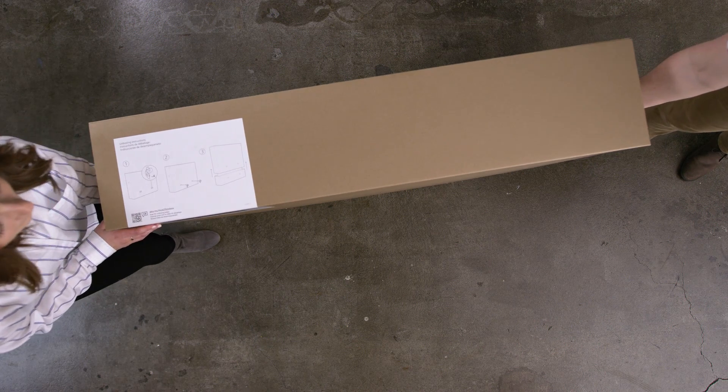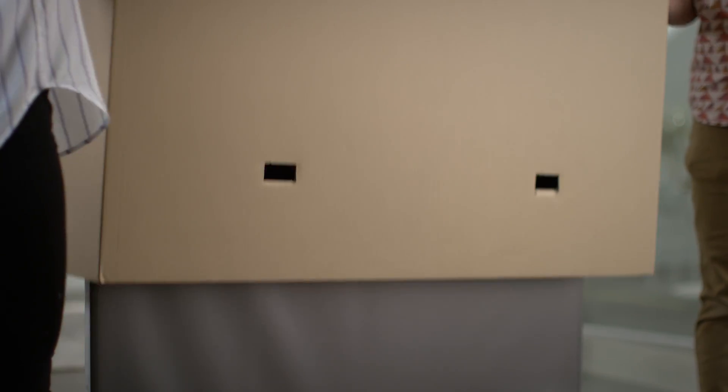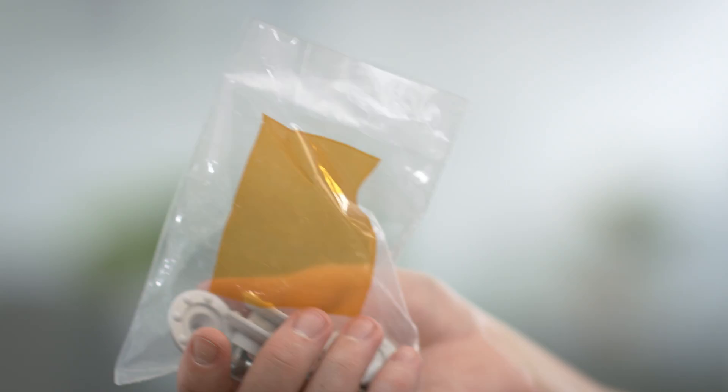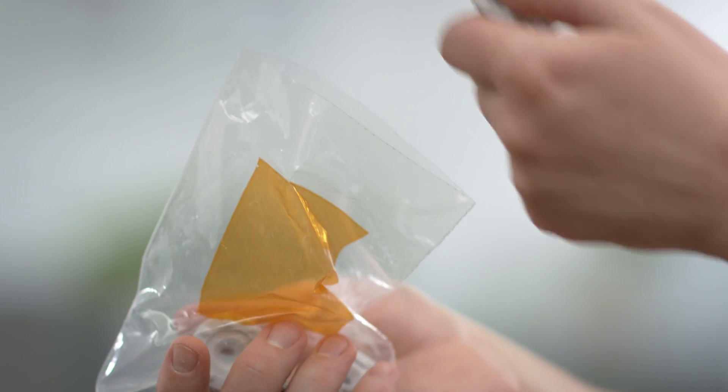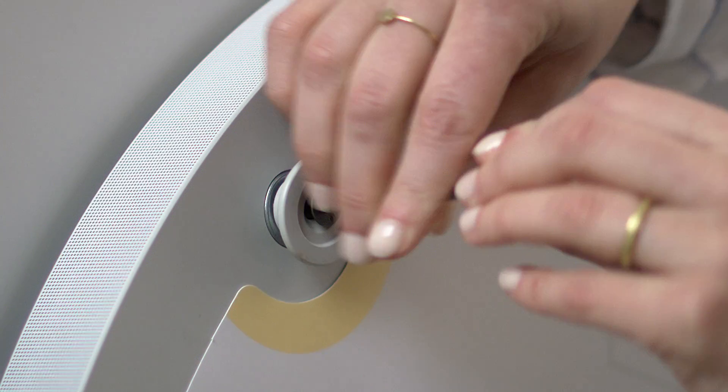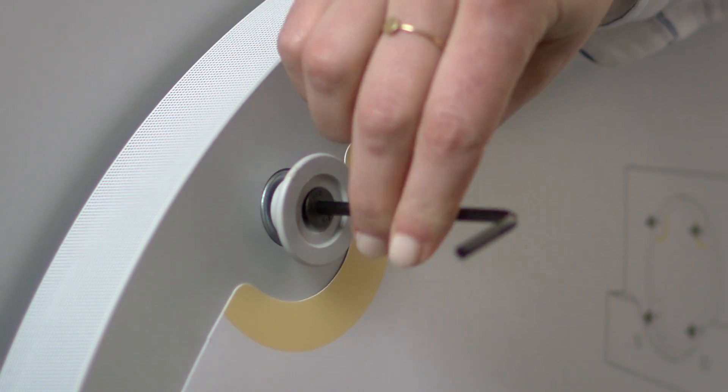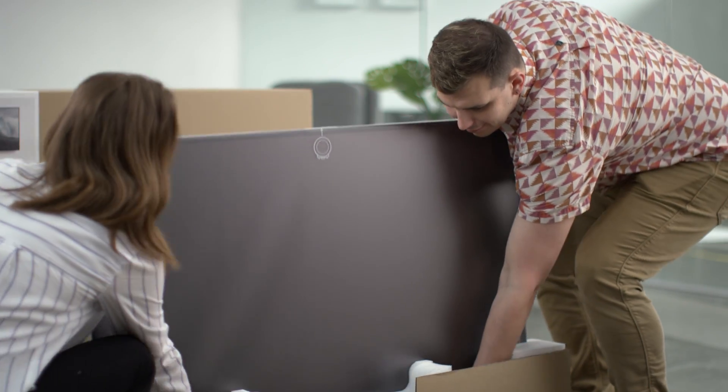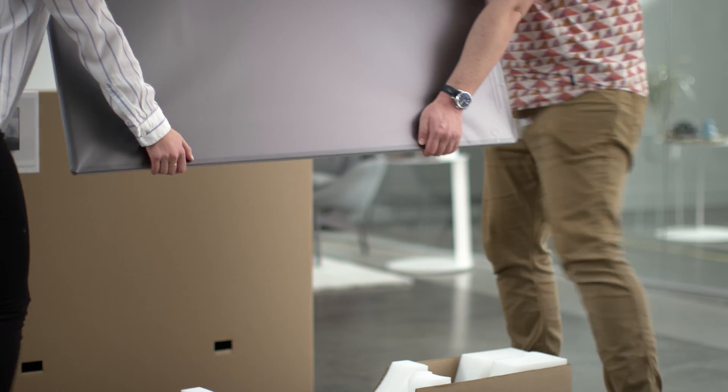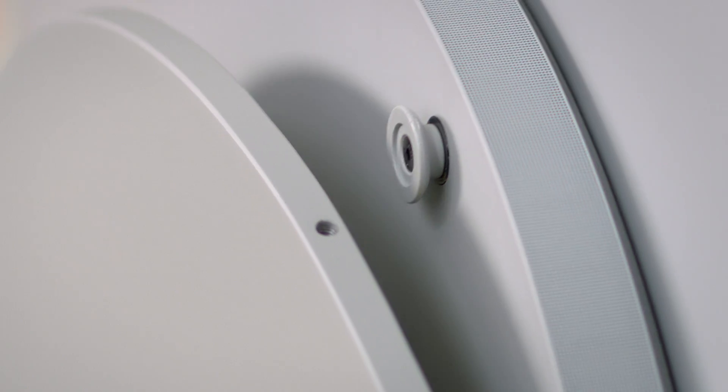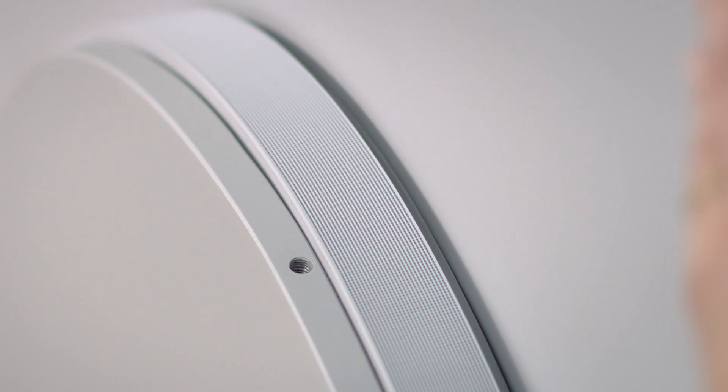If you haven't already prepared your Surface Hub for mounting, go ahead and do so now. Once you're ready, open the orange bag and attach the four hardware mounts to the back of the device. With the help of your colleague, lift the Surface Hub from its box, supporting it with both hands. Align the hardware mounts with the slots on the mounting plate until it sits firmly in place.